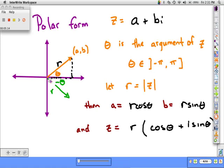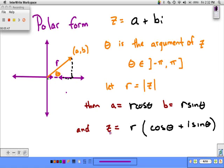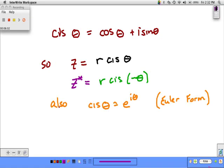So we have polar form of a complex number. If z equals a plus bi, theta is the angle that the vector would make with the positive x-axis, called the argument of z. If r is the modulus of z, then a equals r cosine theta and b equals r sine theta. We could rewrite z as r times cosine theta plus i sine theta, and we have a shorthand: cis.